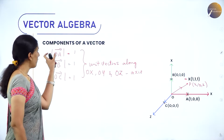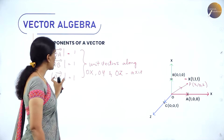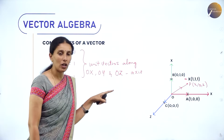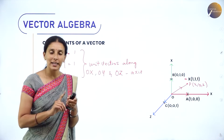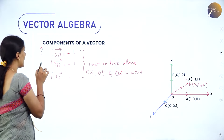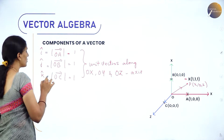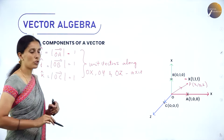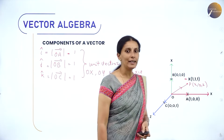Thus vector OA represents the unit vector along the x-axis, vector OB represents the unit vector along the y-axis, and vector OC represents the unit vector along the z-axis. They are called unit vectors along the x, y, and z axes and are represented using î, ĵ, and k̂. So i, j, k are the unit vectors along the x-axis, y-axis, and z-axis respectively.